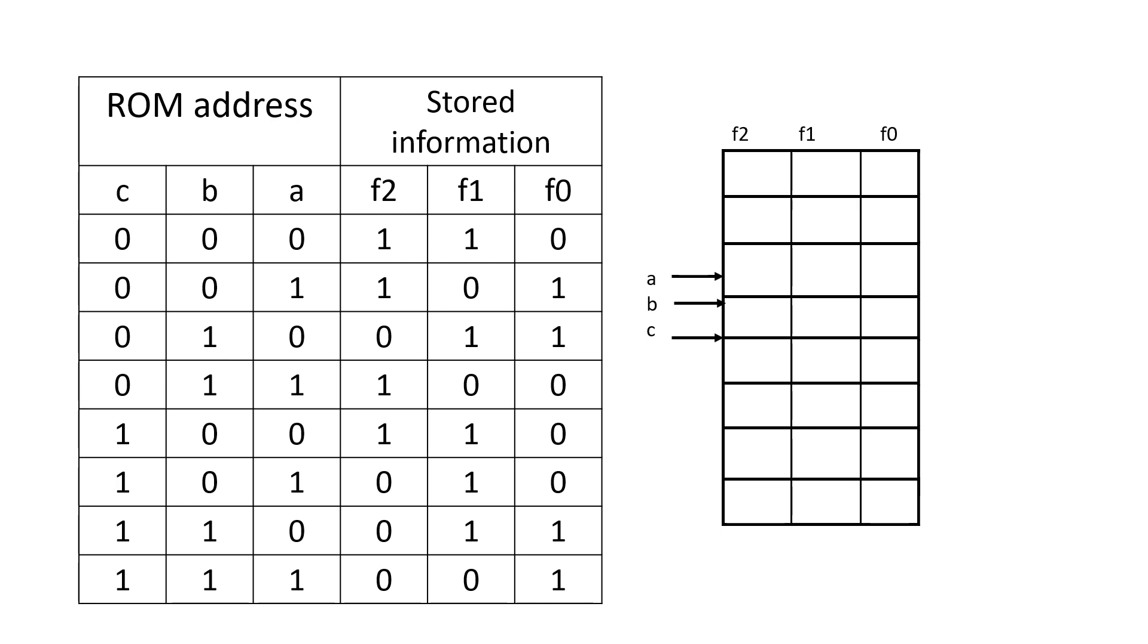When it is M2 minterm F0 should be equal to 1. When it is for M3, M4, M5 output F0 should be equal to 1, 1, 0, 0, 0, 1, 1. What we are going to do in the least significant data bit, we are going to store this information which is 0, 1, 1, 0, 0, 0, 1, 1. On the same lines, you will be storing the information that means output should be equal to 1 when a particular minterm is present in a function.